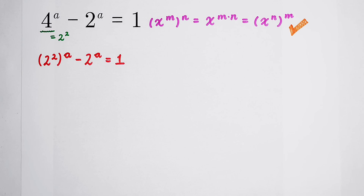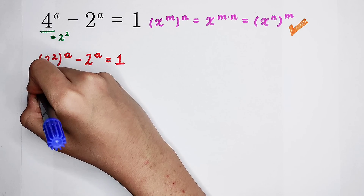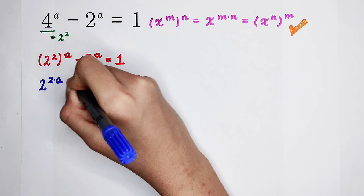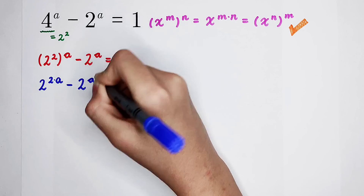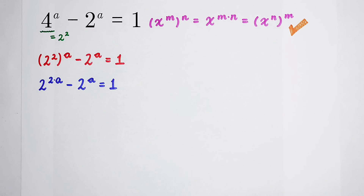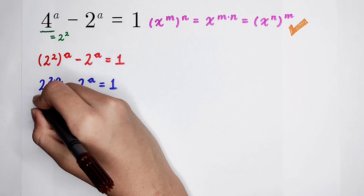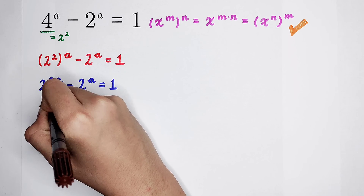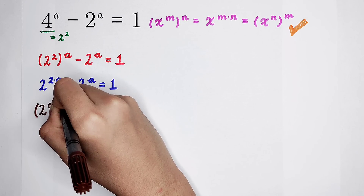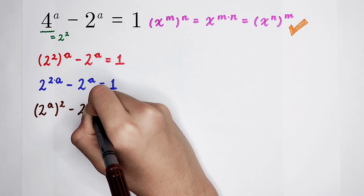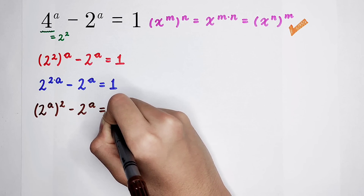Now, 2 to the power of 2, all to the power of a, becomes 2 to the power of 2 times a, minus 2 to the power of a, is equal to 1. Using the rule, 2 to the power of 2a is rewritten as 2 to the power of a, all squared, minus 2 to the power of a equals 1.